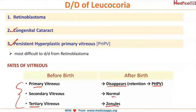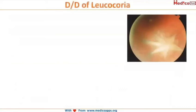The secondary vitreous is the normal vitreous present in our eye. The tertiary vitreous is converted into zonules — please remember that the tertiary vitreous is converted into zonules.